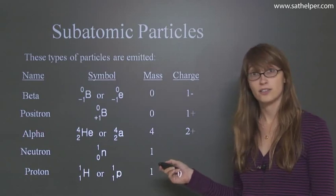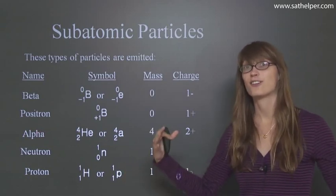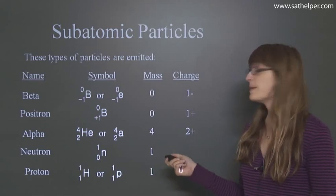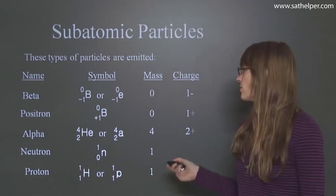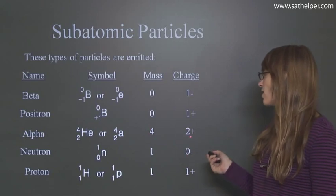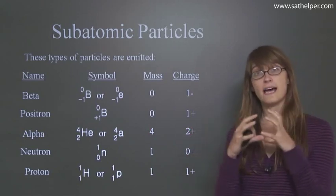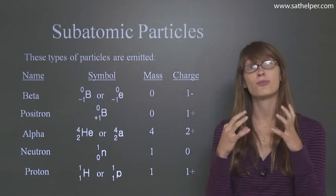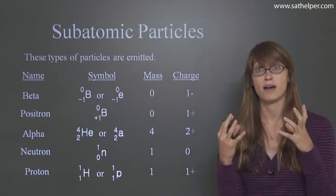Next we have alpha particles. Now these are big guys. These are the largest subatomic particles that we're going to talk about. They're basically the nucleus of a helium atom. So they have a mass of four and a charge of positive two. Inside of the nucleus they have two protons and that's going to give it a charge of positive two.